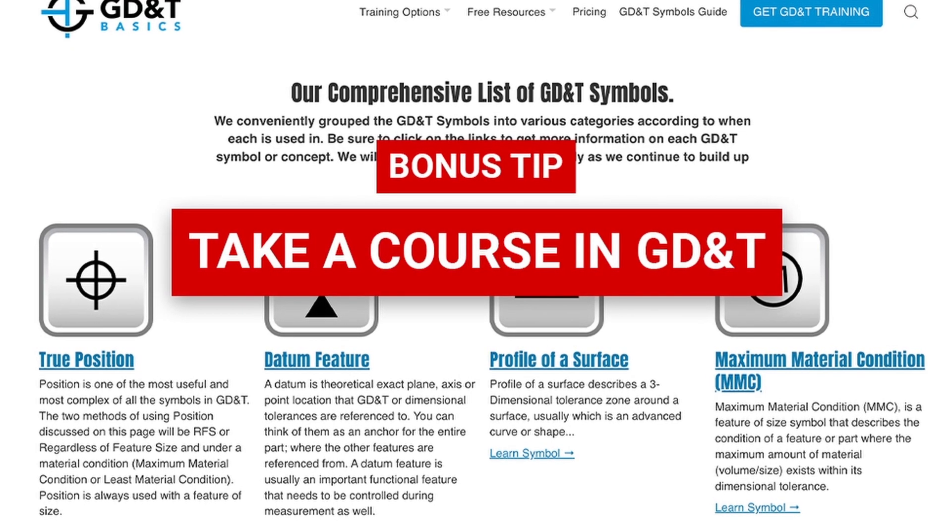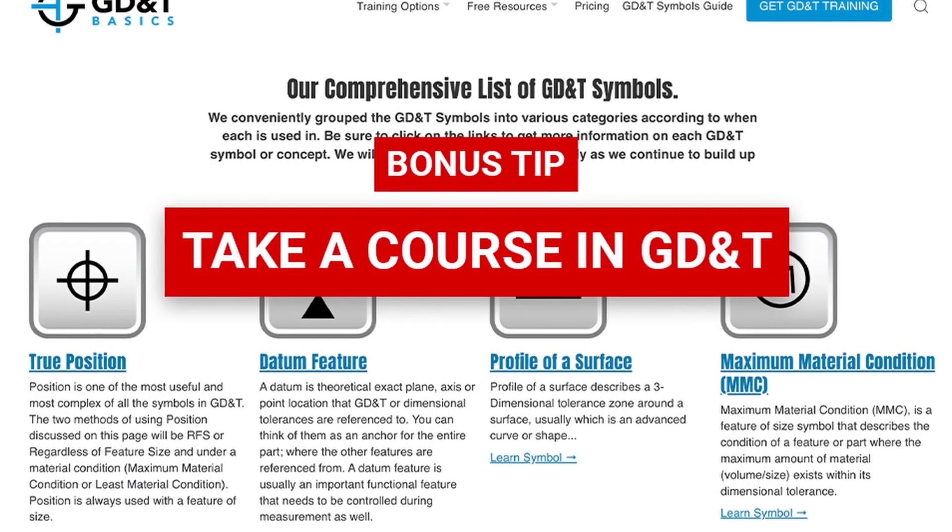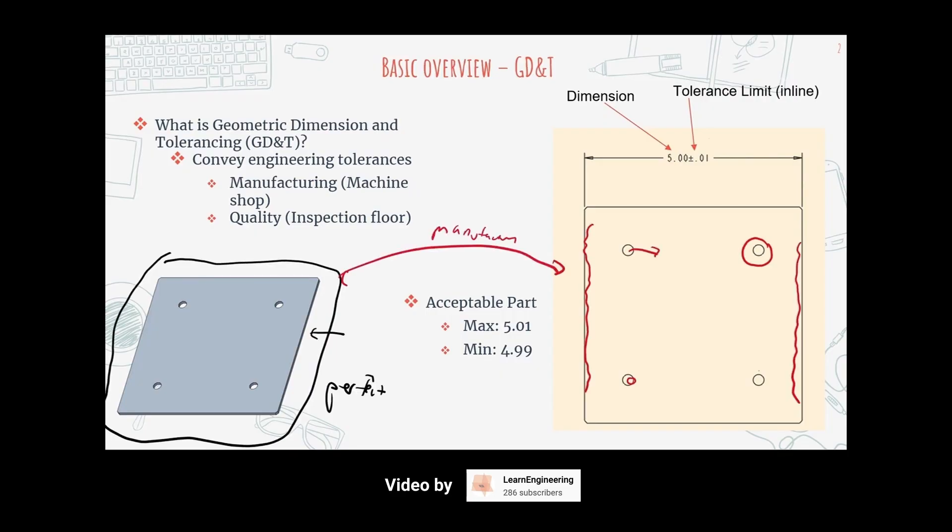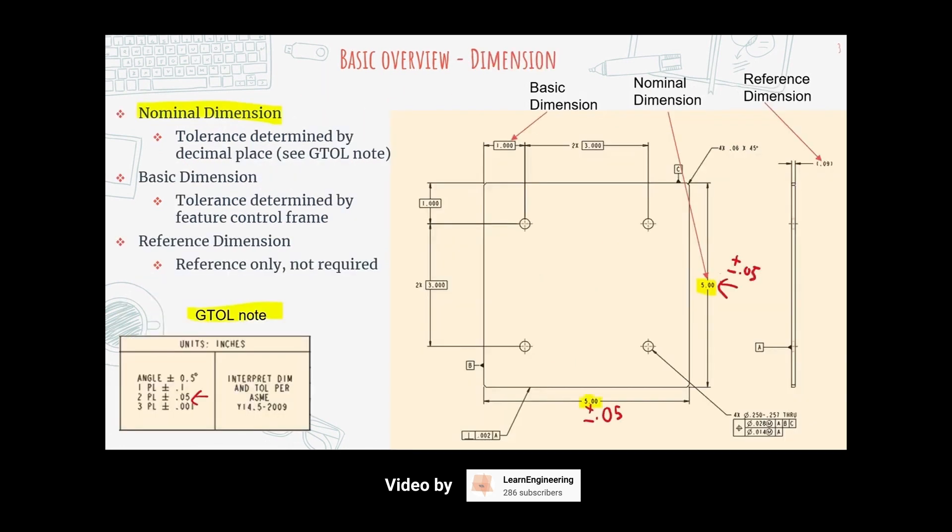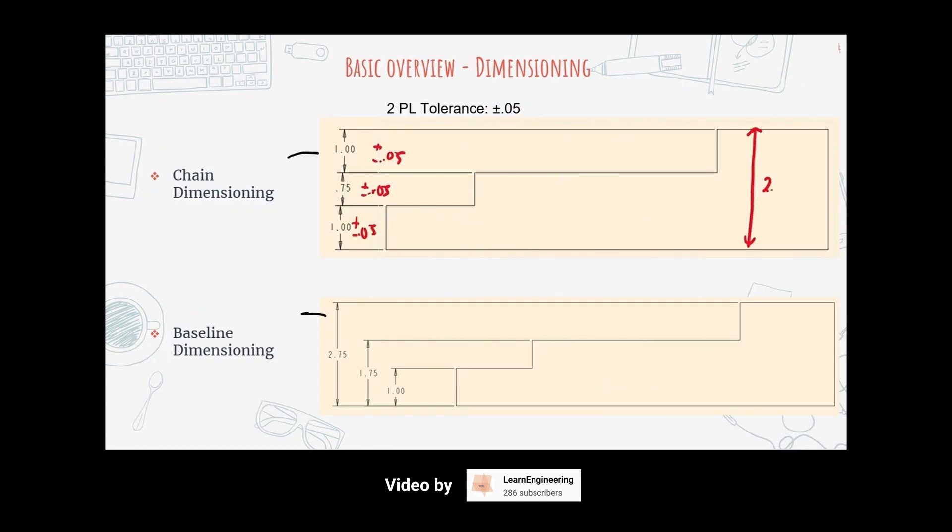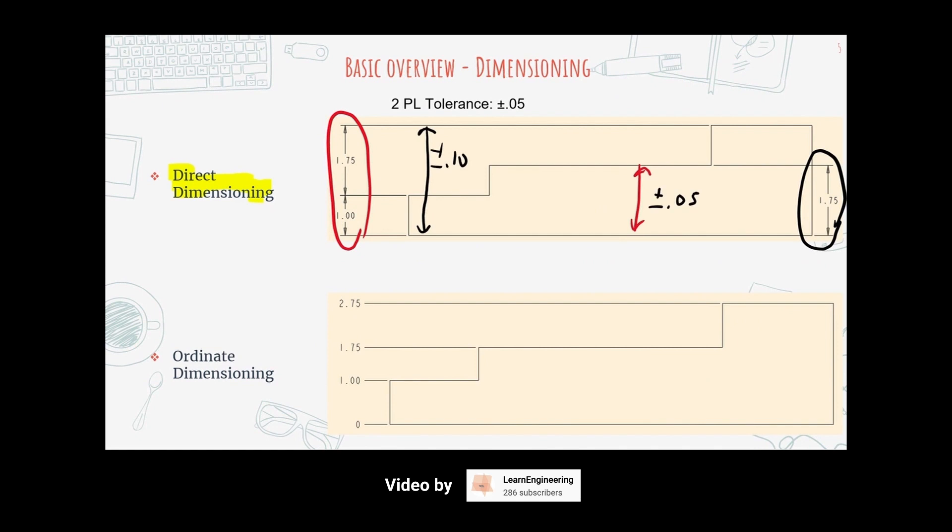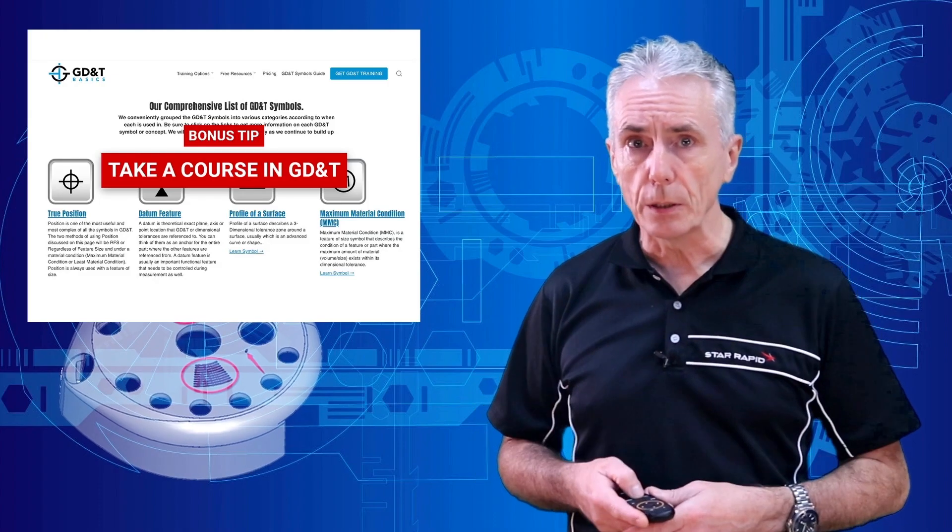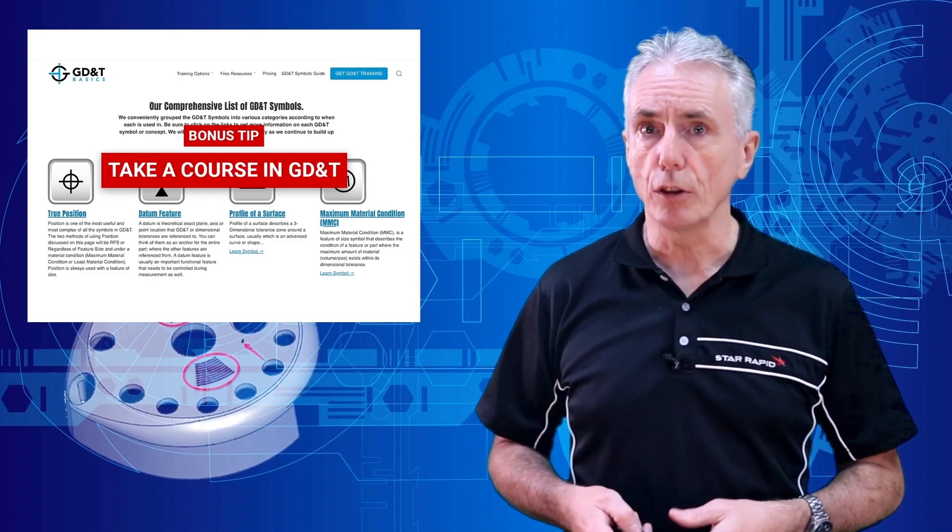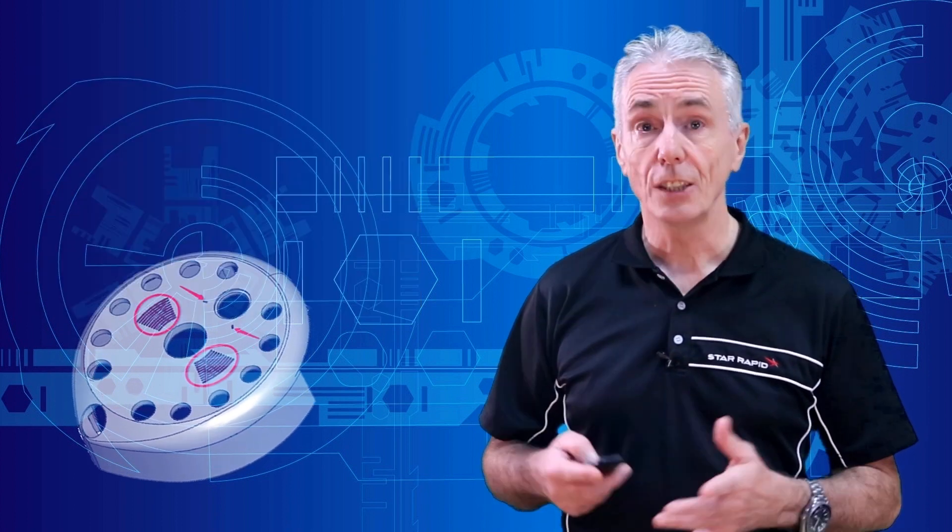Bonus step, take a course in GD&T. Even experienced design engineers may not know how GD&T on a drawing affects manufacturability. Also, standards are constantly being updated to reflect the latest advances in material and manufacturing technology, so it's always a good idea to keep up to date. At the bottom, we've shared some links to a few good online resources that you can check out.